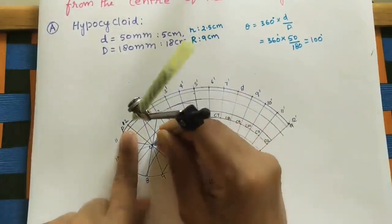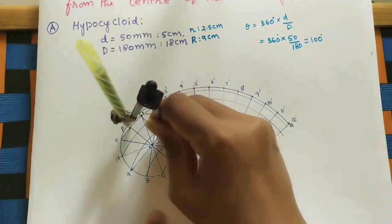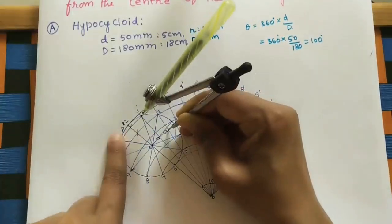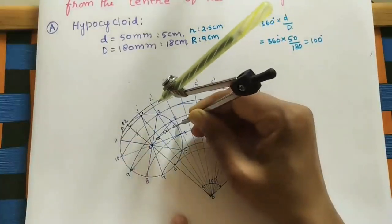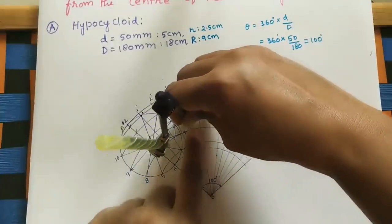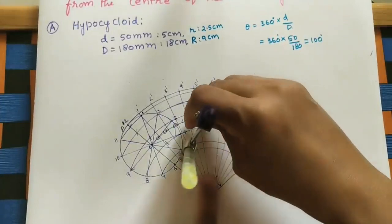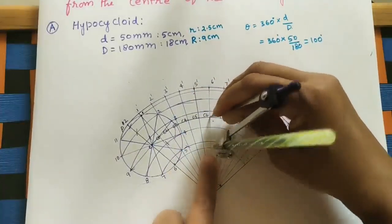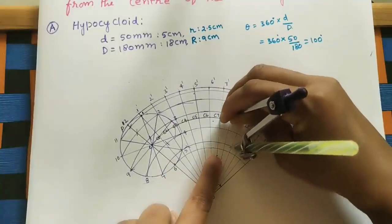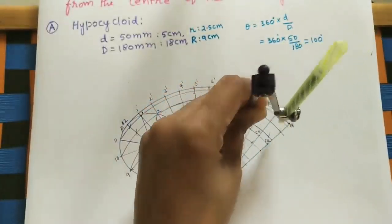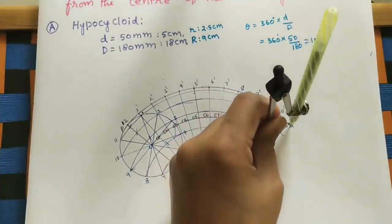Take the radius of the smaller circle with the compass. When the center shifts to C1, draw an arc on the first line — P moves to P1. From C2 on the second arc, P moves to P2. Continue: C3 gives P3 on the third arc, C4 gives P4, C5 gives P5, C6 gives P6, C7 gives P7, C8 gives P8, C9 gives P9, C10 gives P10, C11 gives P11, and C12 gives P12.